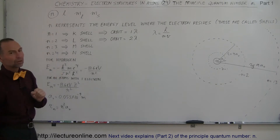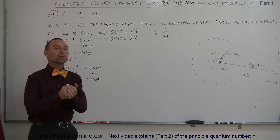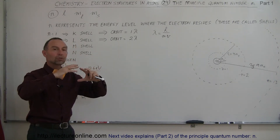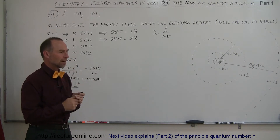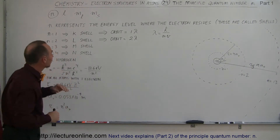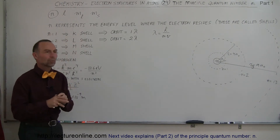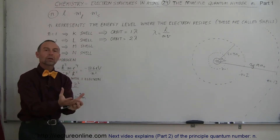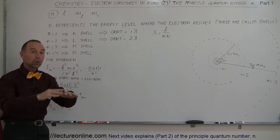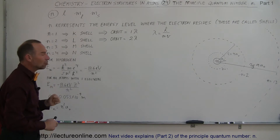The first quantum number is called the principal quantum number n, because it defines the energy levels where the electrons reside. The electron can reside in the lowest energy level, which we call quantum number equal to one. That's also called the K-shell. Electrons reside in regions around the nucleus called shells, and the innermost region — the lowest energy state — has quantum number n equals one and is called the K-shell.